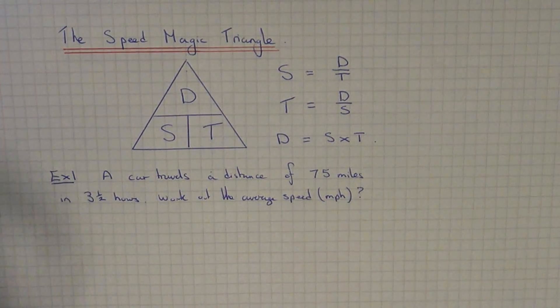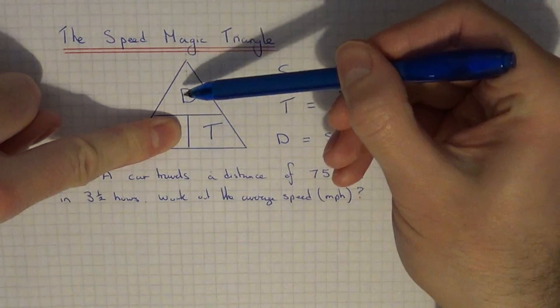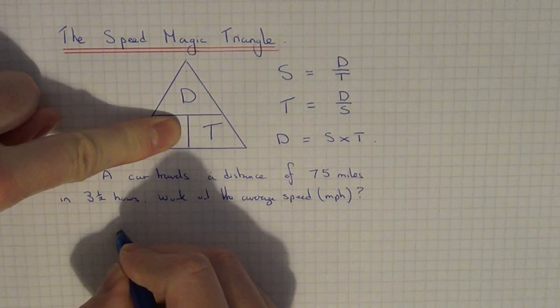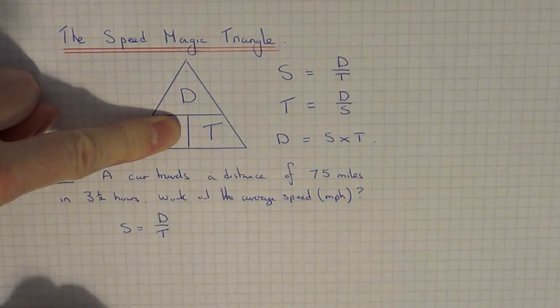So all we need to do is look at your triangle. What are we after? We're after the speed. So if you cover up the speed, it's distance divided by time. So write that formula down.